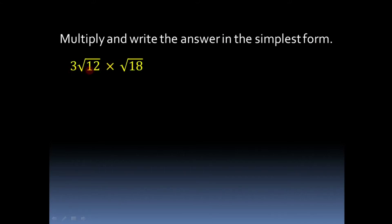Multiply and write the answer in the simplest form. The first problem is 3 root 12 into root 18. Now to multiply or divide any two surds, only one condition must be satisfied: the order of those surds must be equal. Here root 12 and root 18 are the two surds given, which have order 2, which are equal. So we can multiply them. To multiply them we consider the number which is along with the surd.